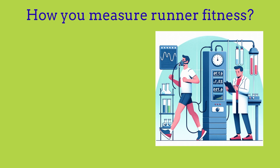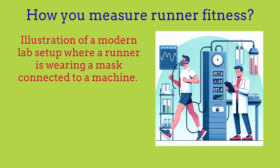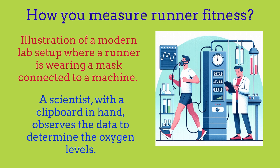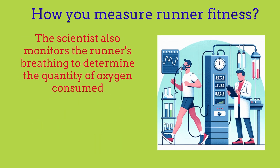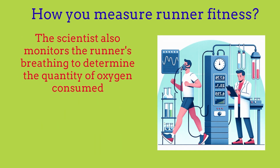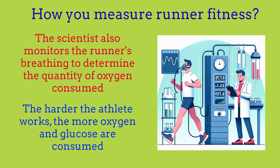We're going to kick things off with how you can measure runner fitness. On the right there's an illustration of a modern lab setup where a runner is wearing a mask connected to a machine, and a scientist with a clipboard is observing the data to determine the oxygen levels of the runner. The scientist monitors the runner's breathing to determine the quantity of oxygen consumed, noting that the harder the athlete works, the more oxygen and glucose is consumed.